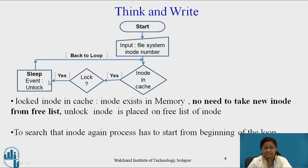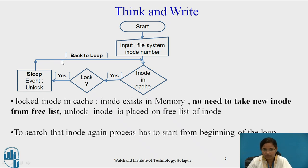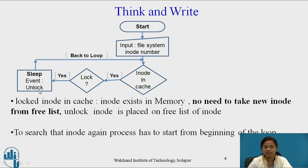Whenever some other process frees that i-node, all the processes waiting for that i-node wake up. Whenever a particular process gets access to the i-node it was requesting, that i-node gets locked again. Since that i-node is already present in cache, there is no need to take the i-node from the free list, and the process has to sleep for the event that the i-node becomes free. That is why the process enters back into the loop.